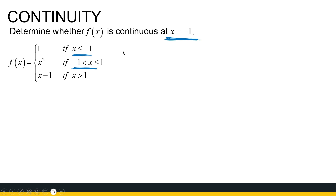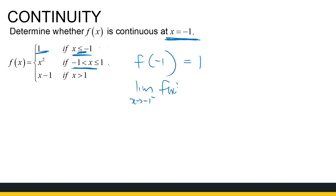The first step is to find f of minus 1 — is the function defined at minus 1 and what is its value? At x equal to minus 1 we use the first piece, which is the constant function 1. Next, we must look at the limit as x approaches minus 1. Because we have a piecewise function, we need to examine the left-hand limit and the right-hand limit separately before we can determine whether the overall limit exists.